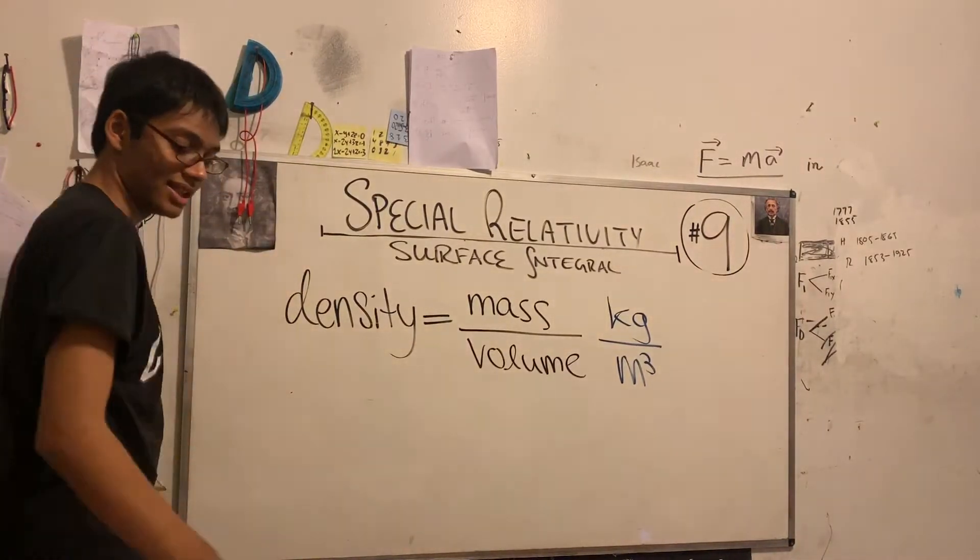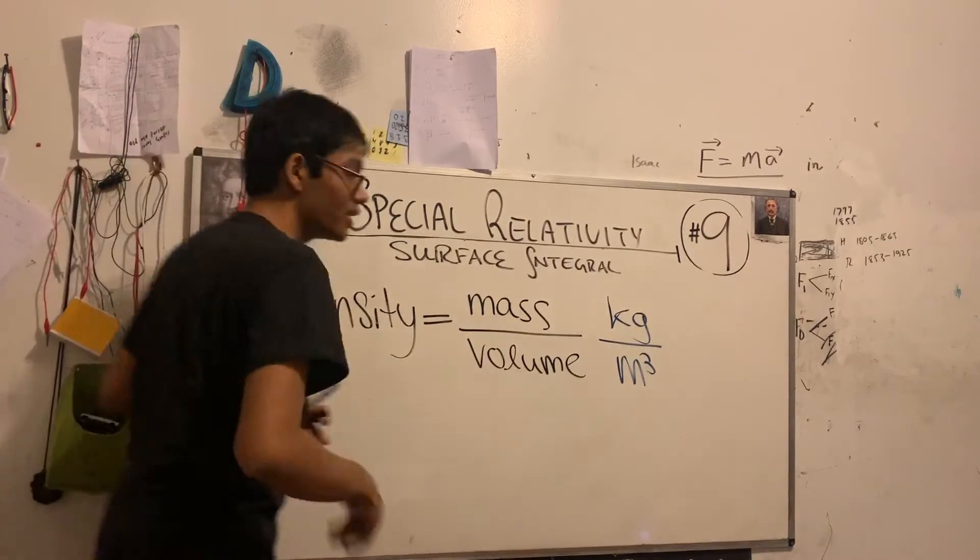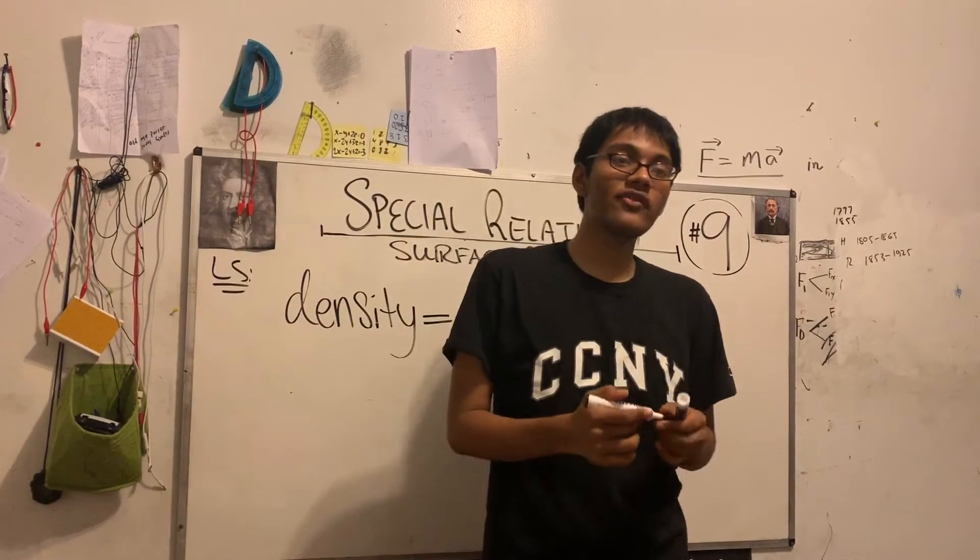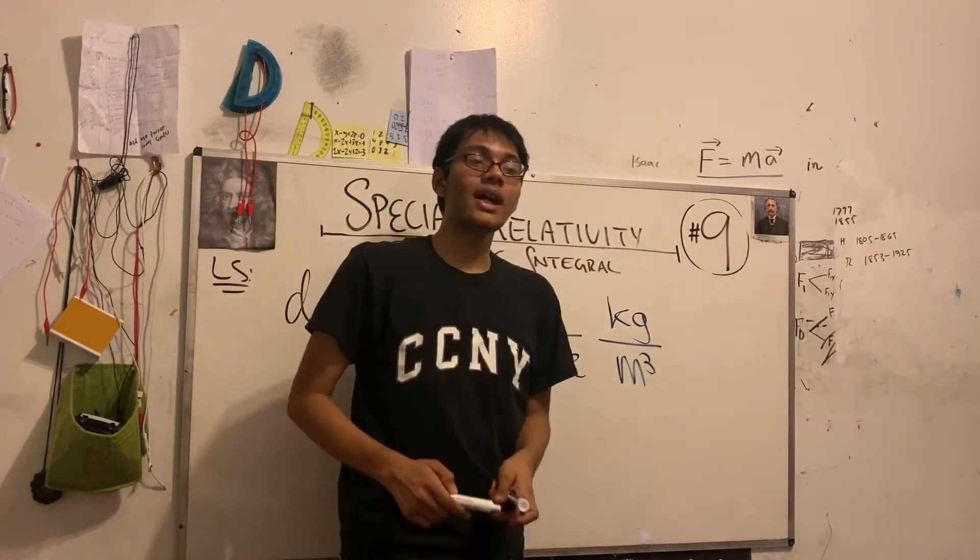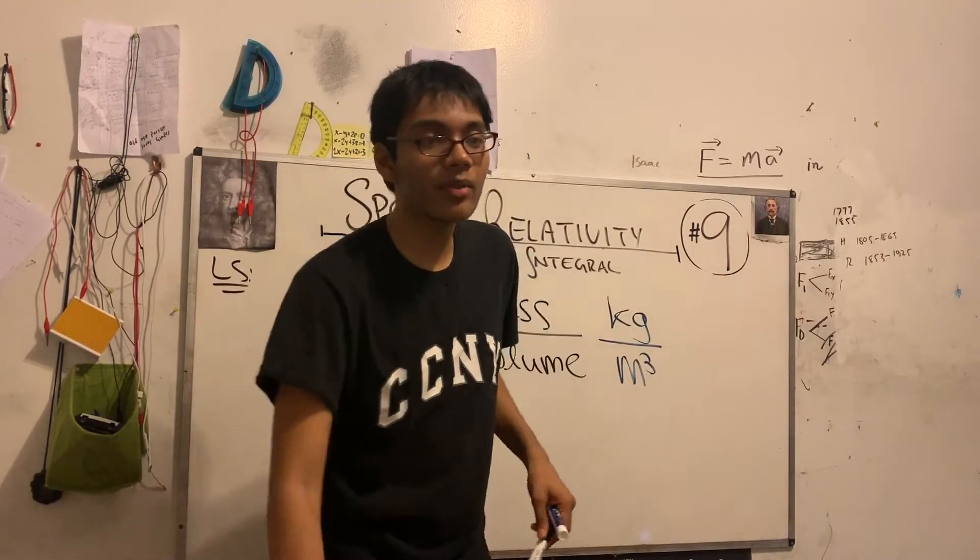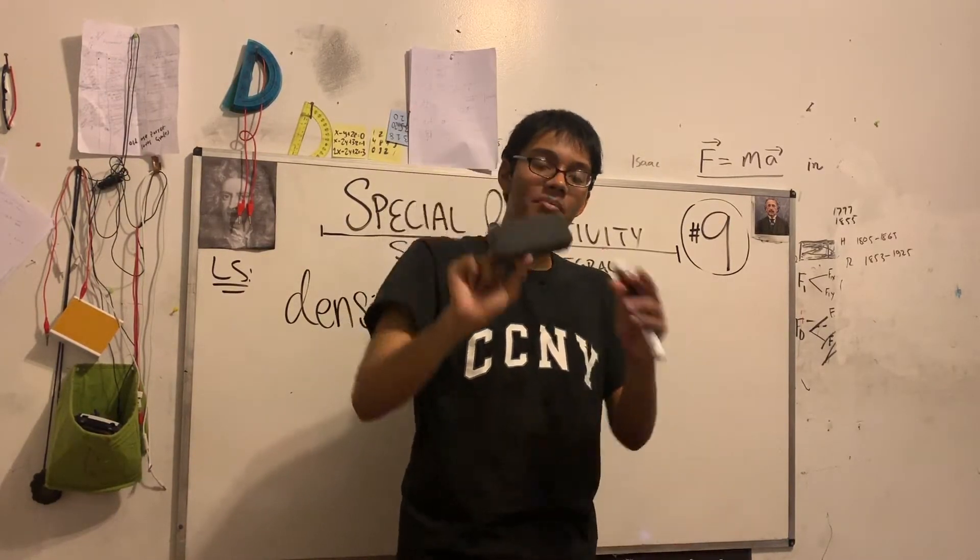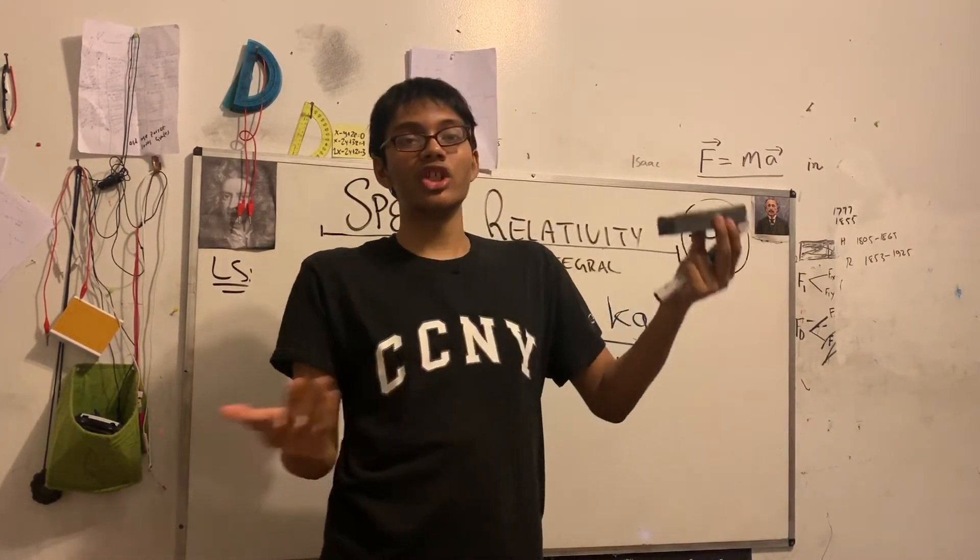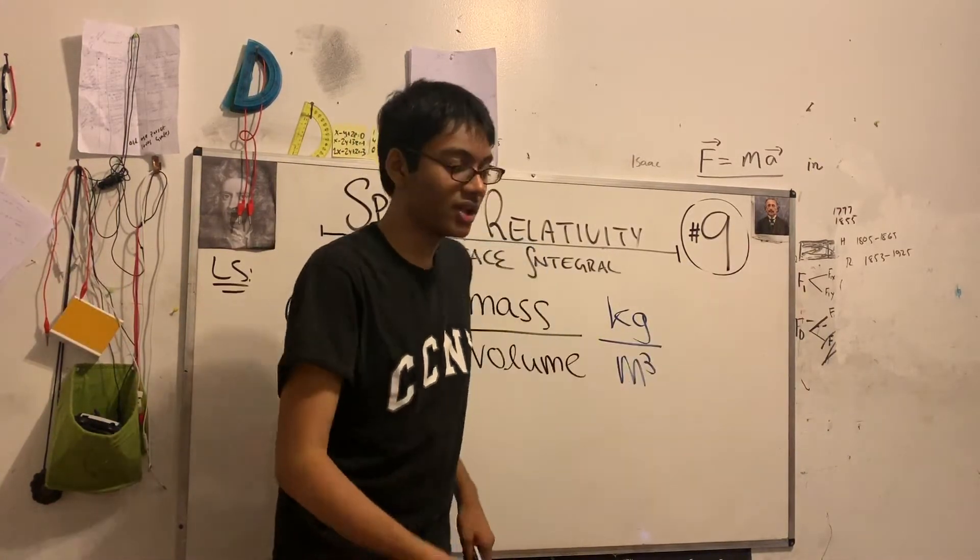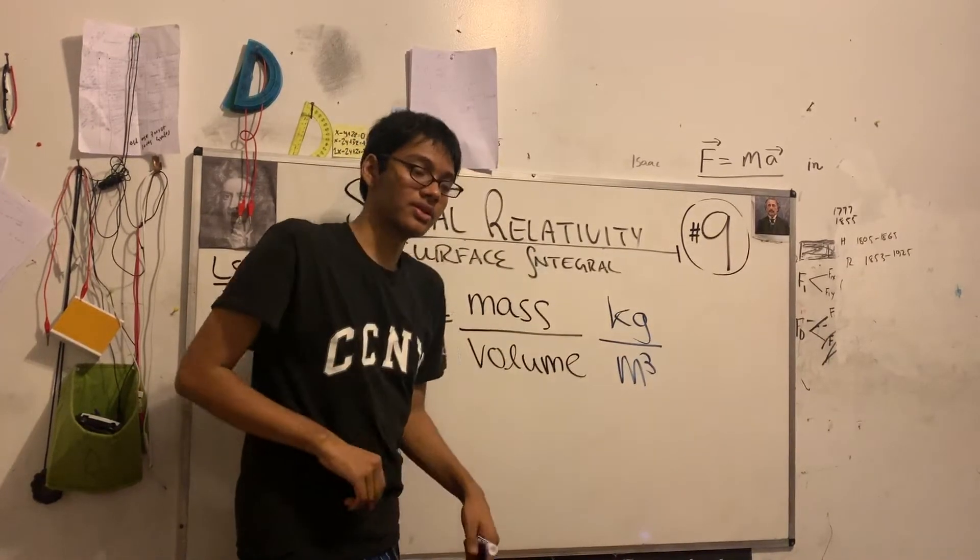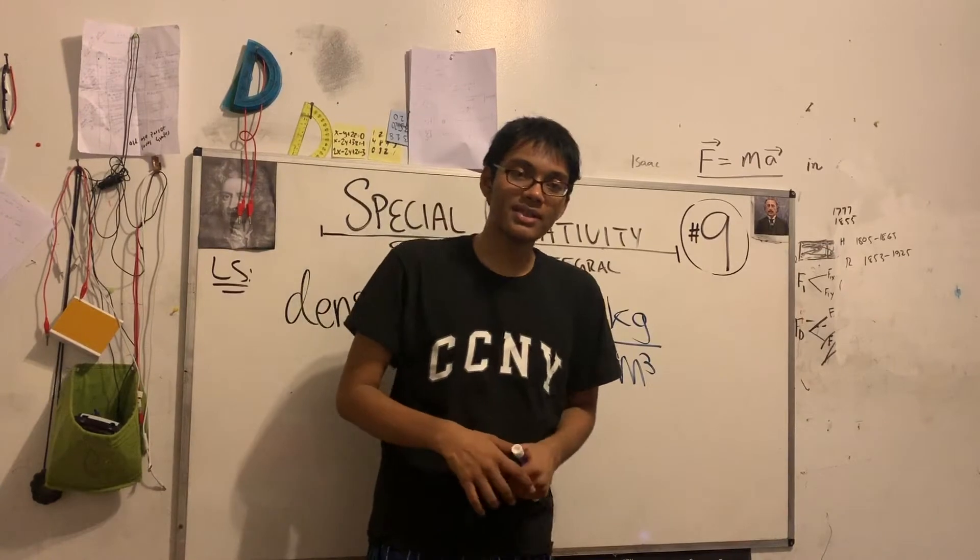So right now during the lesson, we're going to find out how we can use the idea of the surface integral to compute the mass of any object. It might be a variable surface like this eraser. It might look rectangular, but it has a lot of ridges in it. How do you calculate the mass of something like this if you only know the density and volume, and those are also variables? Well, the surface integral is going to help us answer that question.